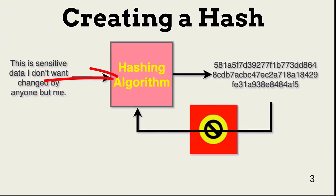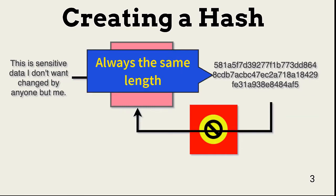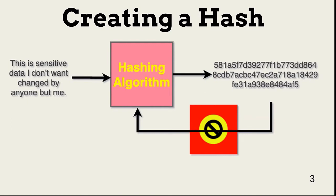To create a hash, plaintext is fed to a hashing algorithm. The hashing algorithm does not encrypt the message. Encryption allows reversal of the process; hashing does not — that is not the purpose of hashing. The output of the hashing algorithm is a fixed-length value based on the precise content of the plaintext. If one or more characters in the plaintext is changed, the entire hash value changes. There should be no entropy, no recognizable patterns shared by the plaintext and the hash. Further, the hash value is almost never the same size as the associated plaintext.